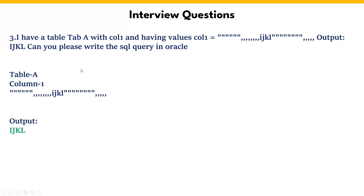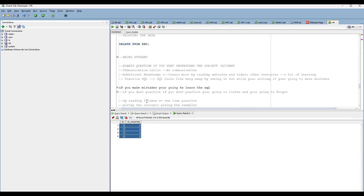Now let's get into the third question. In the third question, I have a table A which contains a single column. That column has values with multiple double quotes, commas, and IJKL — junk characters mixed with alphabets. What is the expected output? IJKL — meaning they want us to remove all the junk values. Other than alphabets, everything should be removed. So how can we do that? Let's prepare the data.